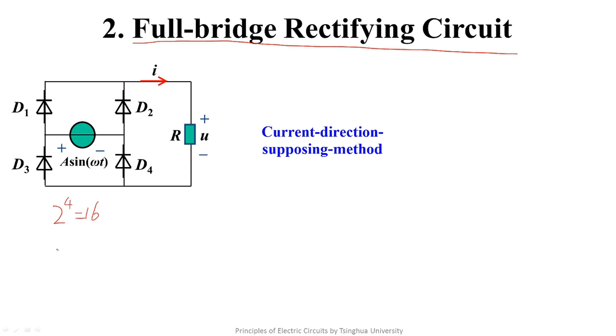The current direction supposing method is to assume a certain current can flow through a diode and judge the direction of the current. Now we assume that a current can flow like this. Because D1 can only flow current in this direction, it will not continue to flow from here because D2 cannot take the reverse current. It must flow in this direction.